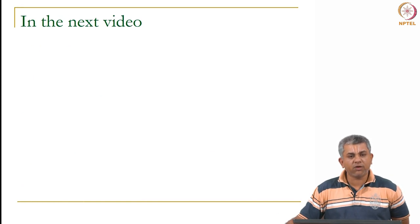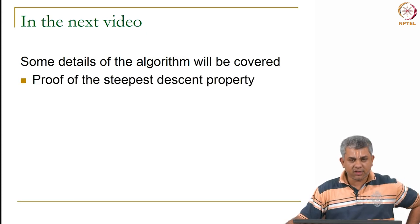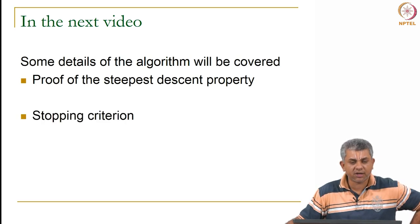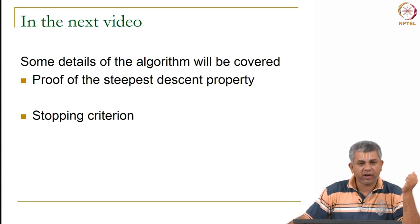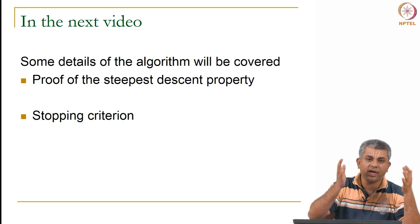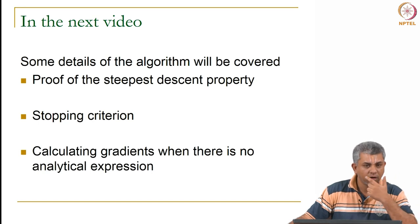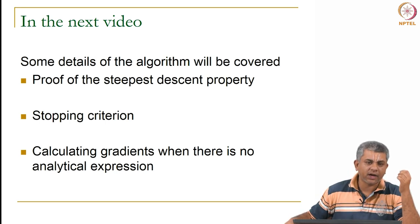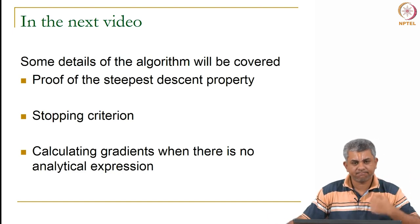In the next video what we will see is some details of gradient descent: first, a proof of the steepest descent property — the fact that the gradient represents the direction of steepest descent. Second, the stopping criteria issue mentioned for the alpha = 0.1 case — you need to decide when to stop the algorithm since you will never actually reach the full minimum. Third, how to calculate gradients when there is no actual analytical expression for j available. These are the three issues we will be discussing in the next video.